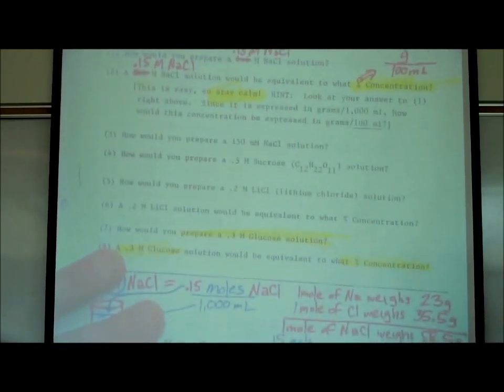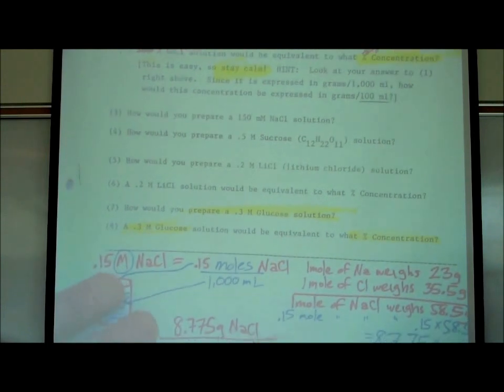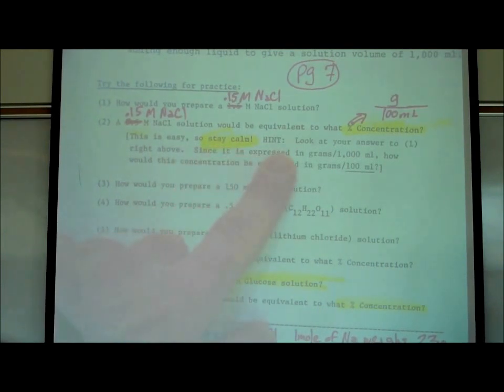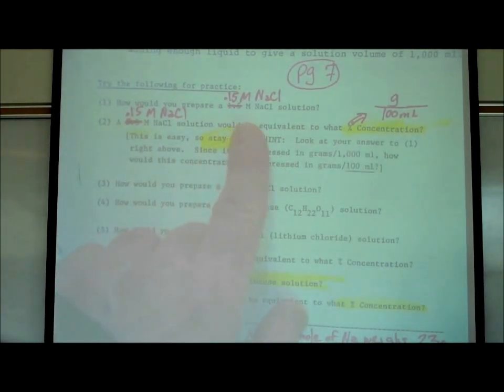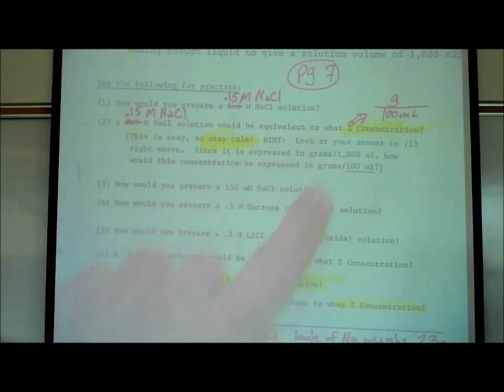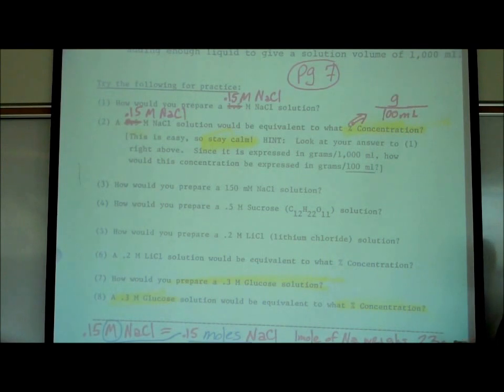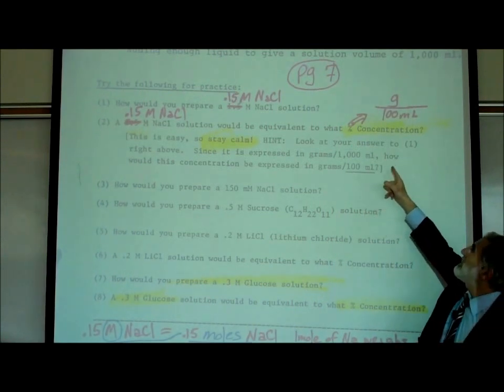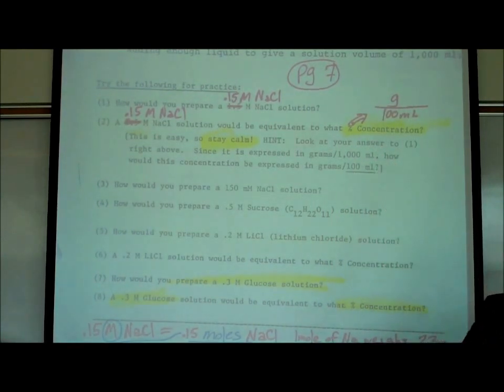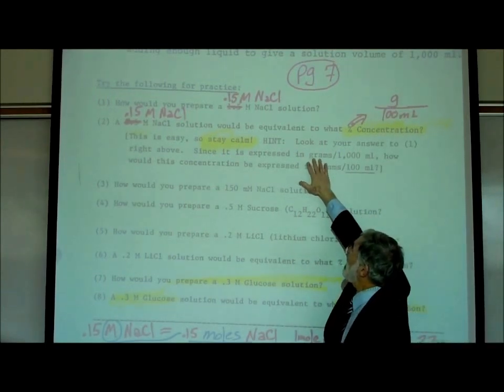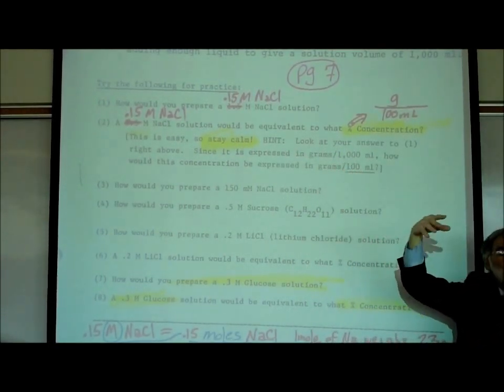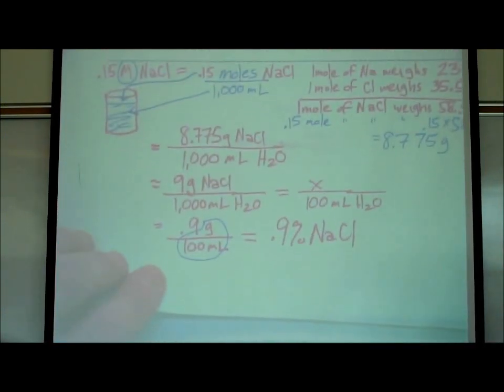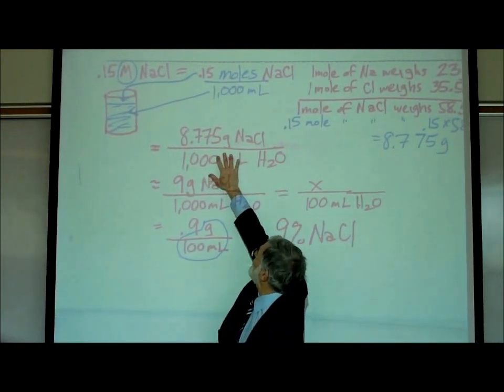Alright, so stay calm. Hint, look at your answer to number one above, and since it's expressed in grams per thousand milliliters, how would this concentration be expressed in grams per hundred milliliters? Well, how's that going to help me? Because the definition of a percent is grams per hundred milliliters. So if you already know how many grams of salt there is in a thousand milliliters, then proportionally, how many grams would that be in a hundred? Well, let's look at below. In other words, and let's round 8.775 grams to nine.